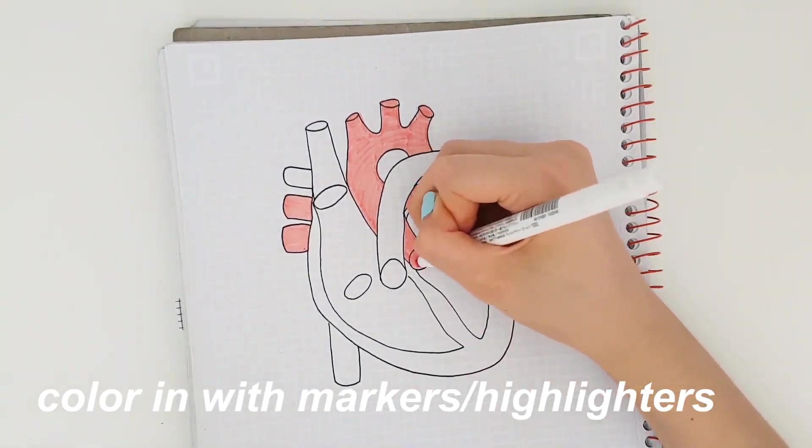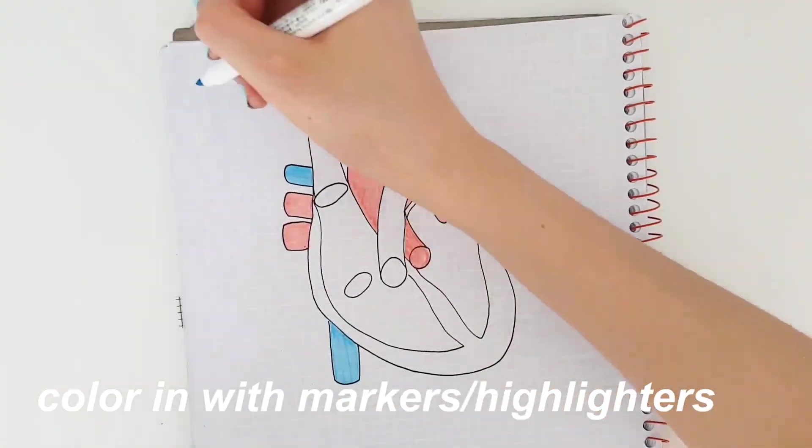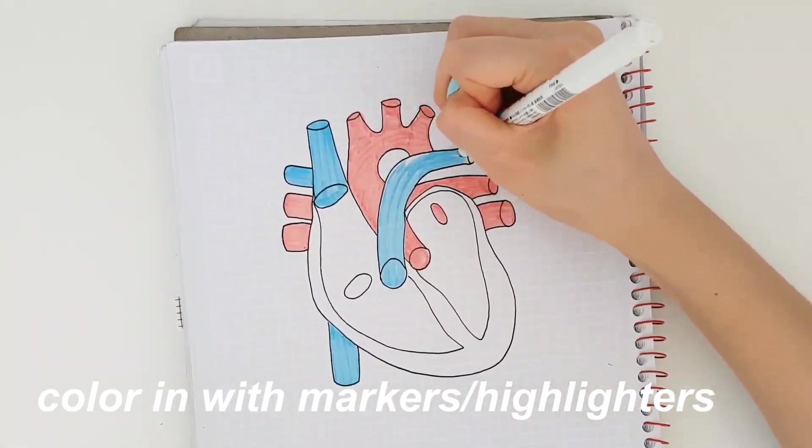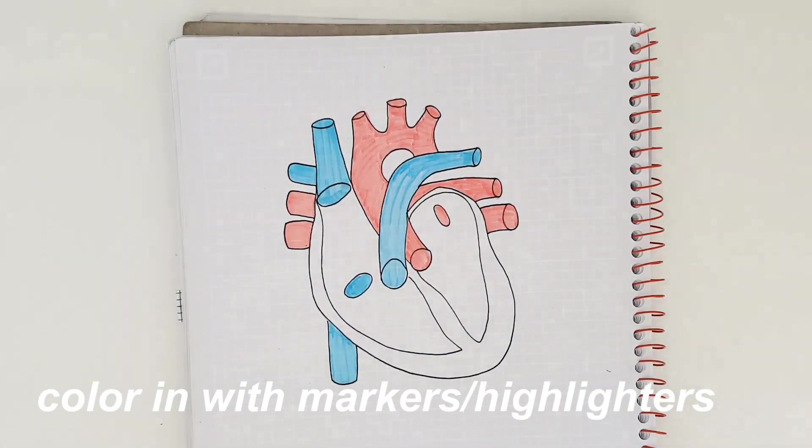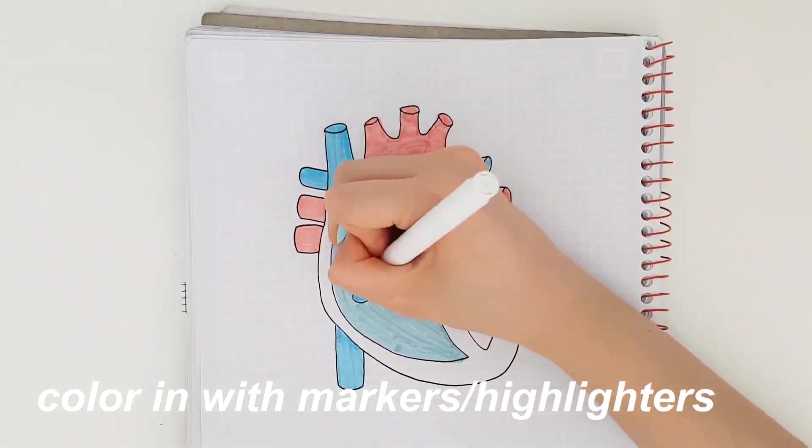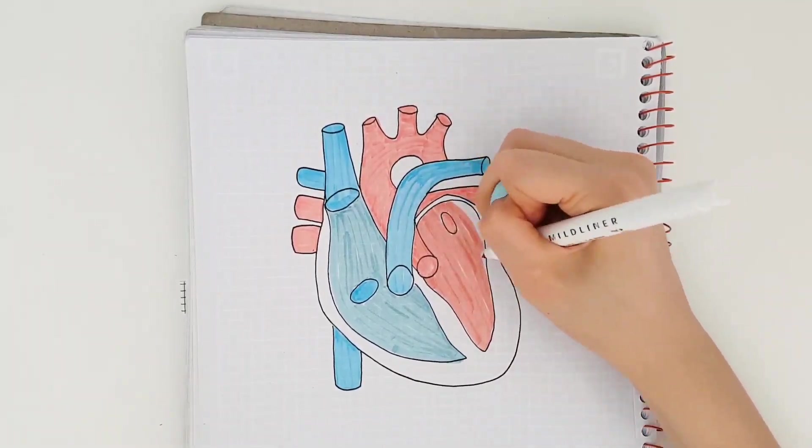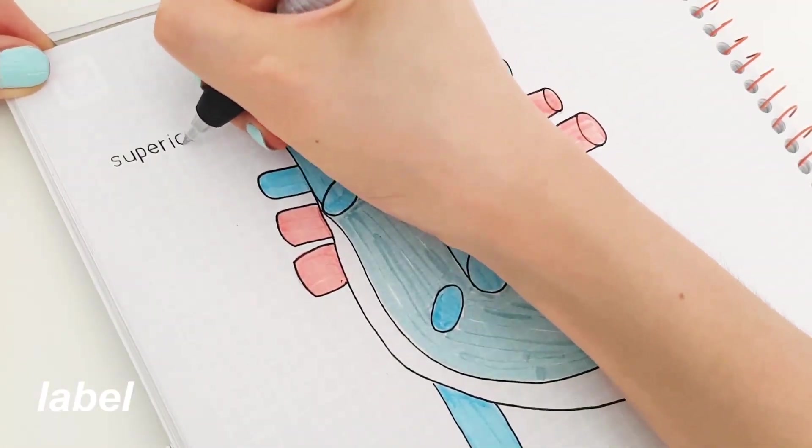So once you've colored it in, which is pretty simple, you can experiment with different colors if you want. Anything goes really at this point. You're gonna want to label the diagram.